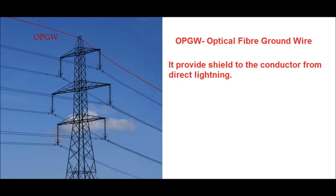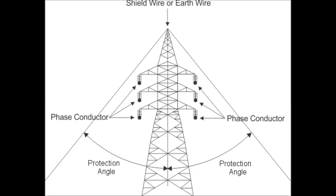A diagram has been shown for a 132 kV double circuit line. Here the earth wire is located at the top of the tower and it provides a protection angle, or shielding angle, to the phase conductors as shown in this diagram. Since the earth wire provides a shield to the phase conductors, it is sometimes called a shield wire.